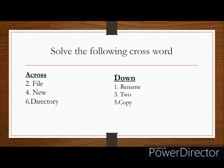Across. First question: data when stored together and saved — data when stored together and saved is called what? A file. So write 'file' inside the boxes given. Find number 2 across and write F-I-L-E, file.